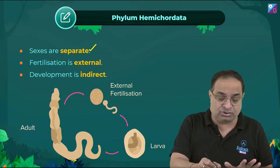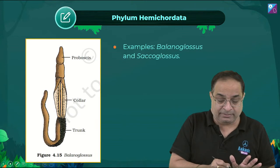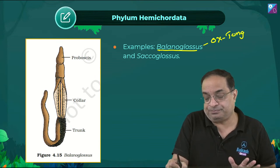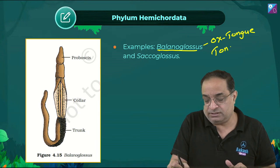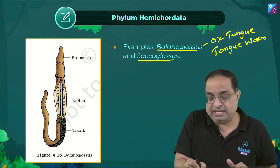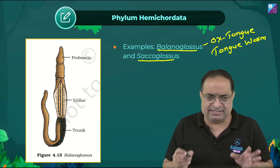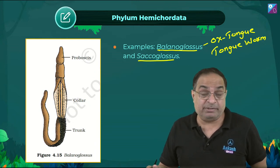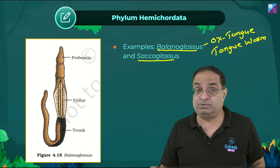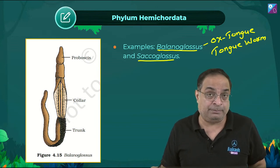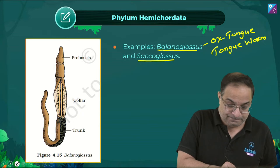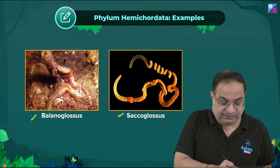In Hemichordata: sex is separate, fertilization is external, development is indirect. Examples: Balanoglossus (ox tongue/tongue worm) and Saccoglossus. Question 8: Proboscis gland is an excretory organ in — the answer is Saccoglossus (Hemichordata). The session PDF will be provided on the Telegram group Bio Key Run Neeti.